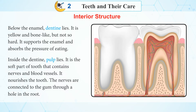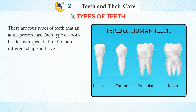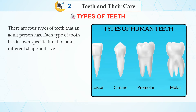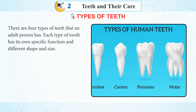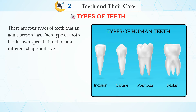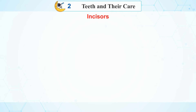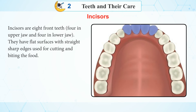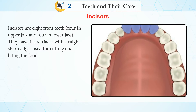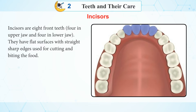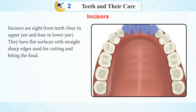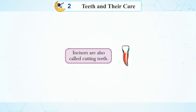The nerves are connected to the gum through a hole in the root. Types of teeth. There are four types of teeth that an adult person has. Each type of tooth has its own specific function and different shape and size. Incisors are the right front teeth — four in the upper jaw and four in the lower jaw. They have flat surfaces with straight sharp edges used for cutting and biting the food. Incisors are also called cutting teeth.